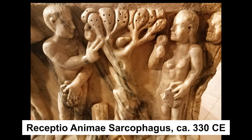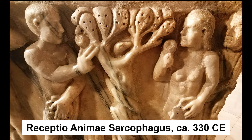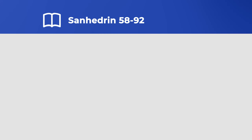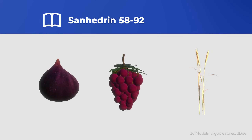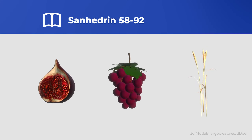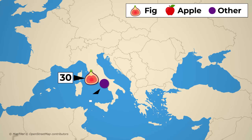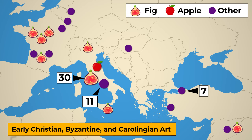There is only one lone example of the fruit being an apple from this period. In early Jewish writing, the rabbis discuss how the fruit could have been a grape, a fig, or even a wheat plant. This map of surviving artworks shows how the fig dominated prior to the 8th century.